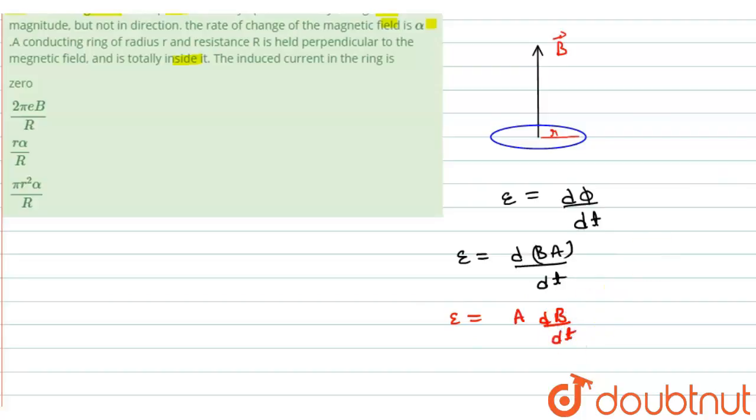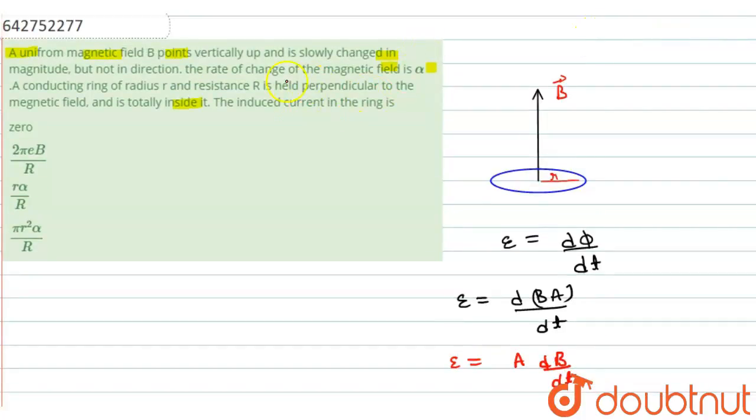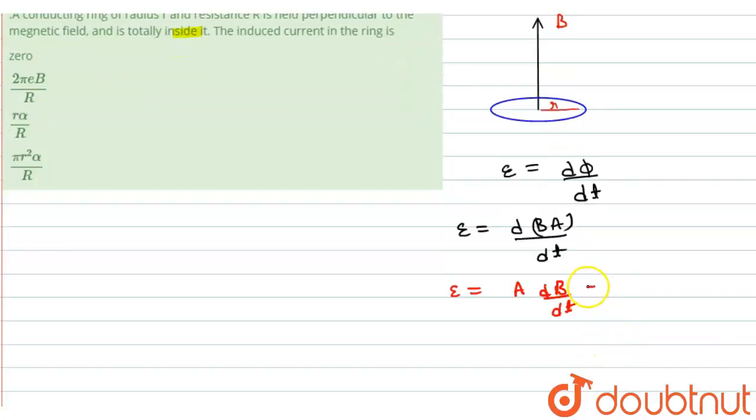Students, as in this question it is given that the change in magnetic field is alpha, that means dB/dt is equal to alpha. So we can write A times alpha, and E will be equal to area, which will be equal to pi r squared alpha.